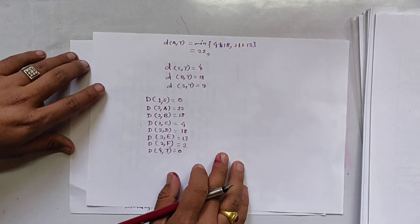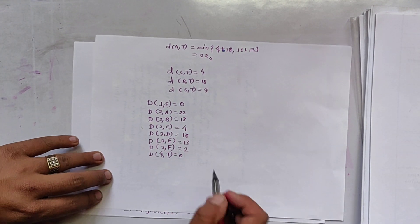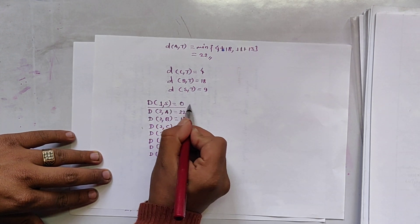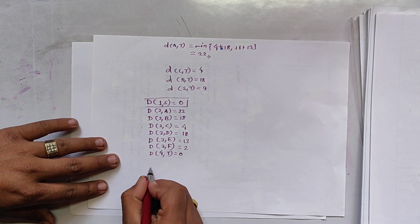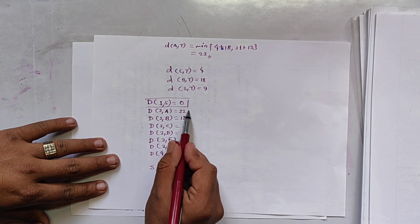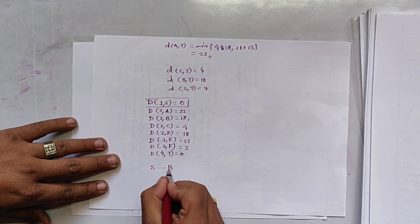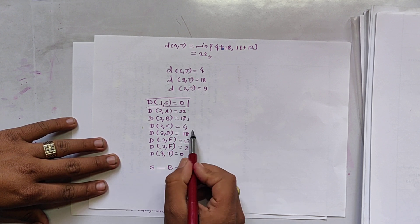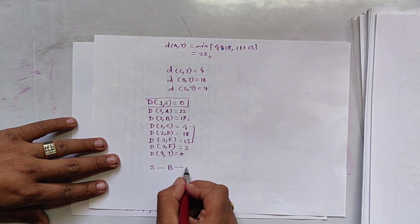So for finding the path, we select the minimum value from each stage. So in first stage, there is only one node and its value is 0. So we select S. In second stage, there are nodes and the minimum value is 4. So we select C. In third stage, there are 3 vertices and minimum value is 2.